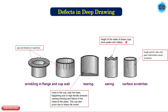Earring refers to the peaks and valleys seen at the height of the drawn cup wall, and this effect is called earring. Scratching refers to scratches on the product surface. Because we are pushing the sheet metal into the die, rough punch or die surfaces and poor lubrication cause the scratches. The main causes are a rough punch, rough die, or poor lubrication.